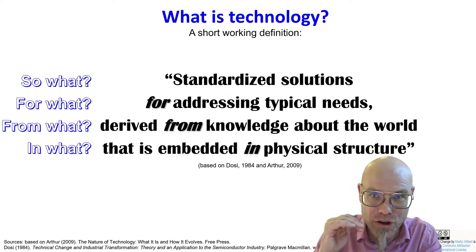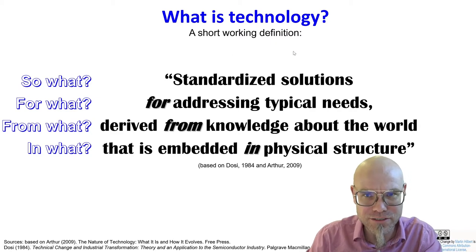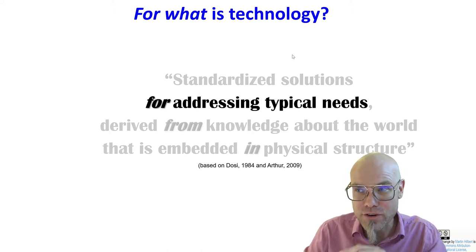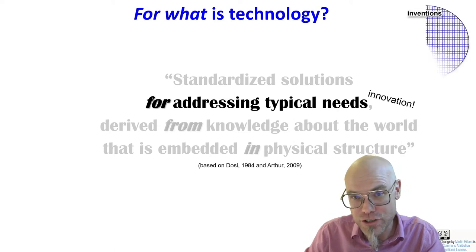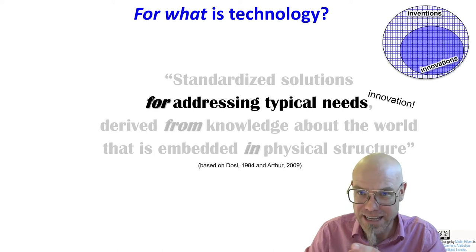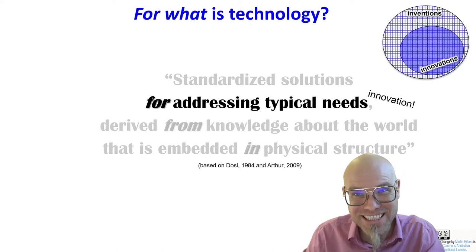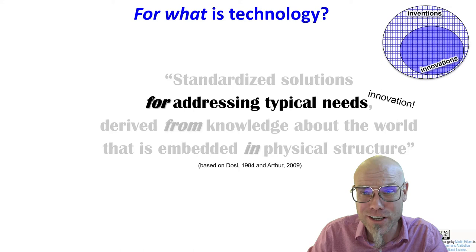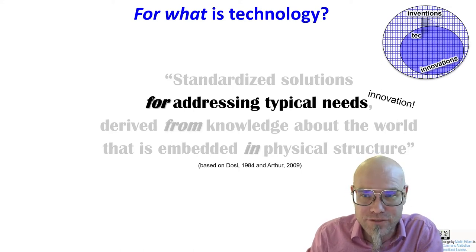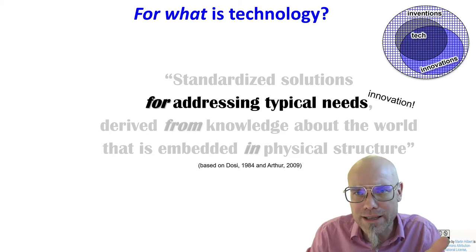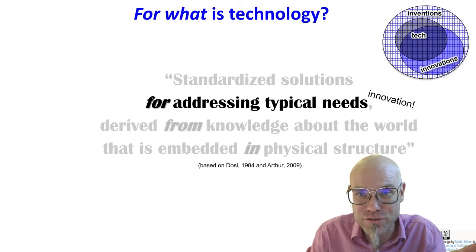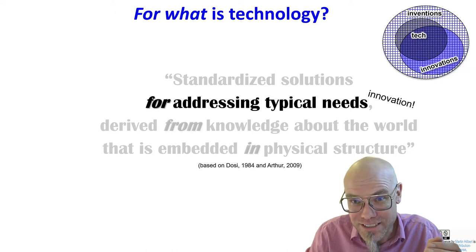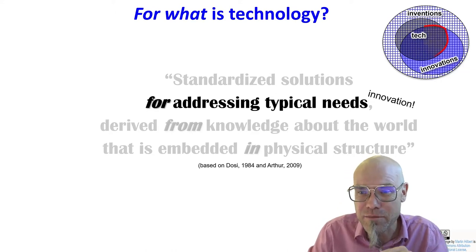We'll go one by one through those elements. Starting with: technology is for addressing typical needs. You'll notice from the literature this is closer to the definition of innovation than invention, because an innovation is an invention that is socially useful. Not all inventions are technologies — a new accounting method, or a new song, can be an invention and become an innovation — so we're talking about technological innovations here, a subset, an intersection in this Venn diagram.